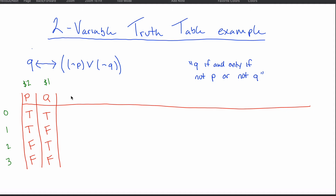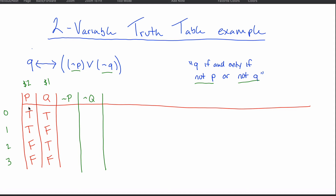Next, add columns that are helpful for solving the problem. First, determine which variables are negated. I have a not-P and a not-Q, so I need both a not-P column and a not-Q column. The negation columns are the easiest to fill out — just copy the opposite of what you see in the original column. T becomes F and F becomes T. Do this for not-P by negating the P column, and for not-Q by negating the Q column.